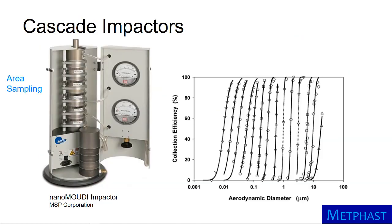Cascade impactors provide a way to collect particles in different size ranges. They pull air through a series of impactor stages that collect smaller and smaller particles. An example pictured here is the NanoMoody, which has stages with 50% collection efficiencies that range from 10 nanometers to 18 micrometers in diameter. The large size and weight of many cascade impactors limits their use to area sampling.